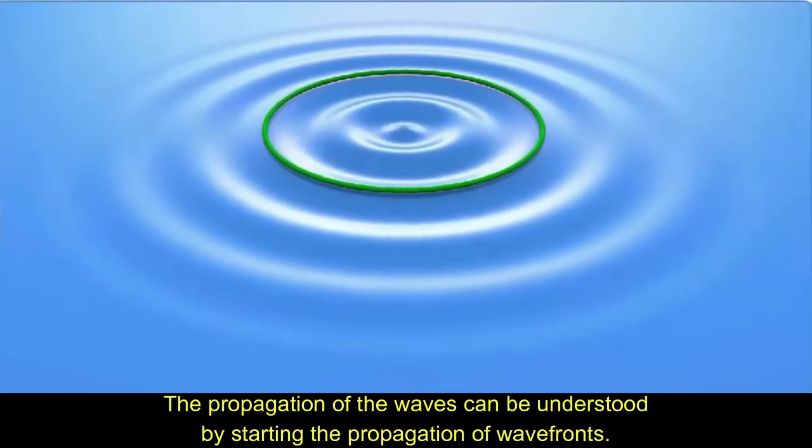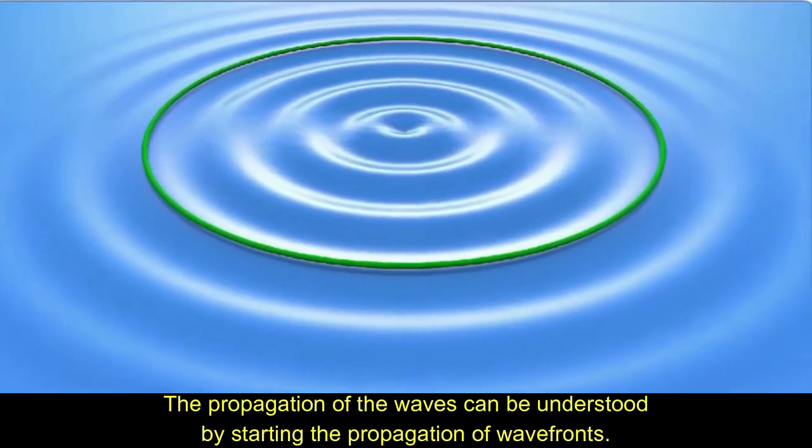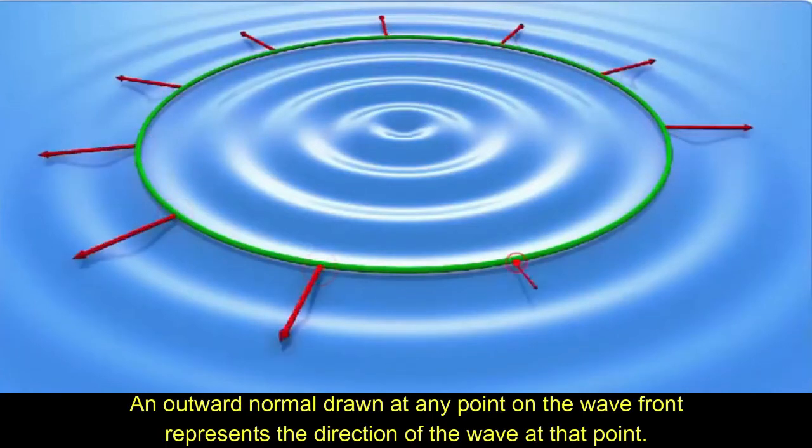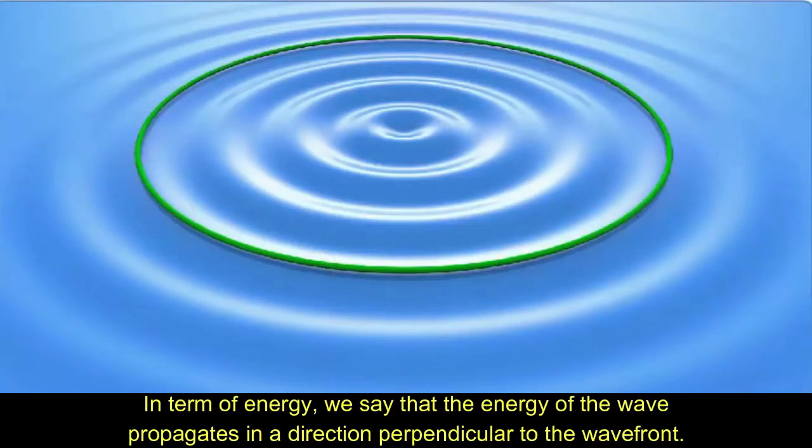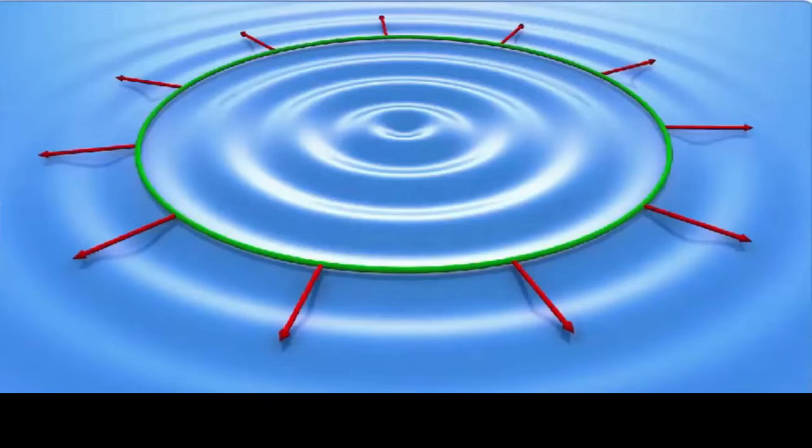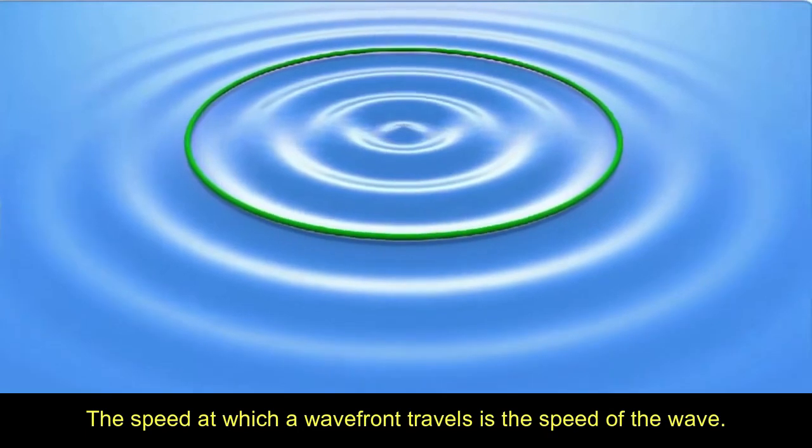The propagation of the waves can be understood by studying the propagation of wavefronts. An outward normal drawn at any point on the wavefront represents the direction of the wave at that point. In terms of energy, we say that the energy of the wave propagates in a direction perpendicular to the wavefront. The speed at which a wavefront travels is the speed of the wave.